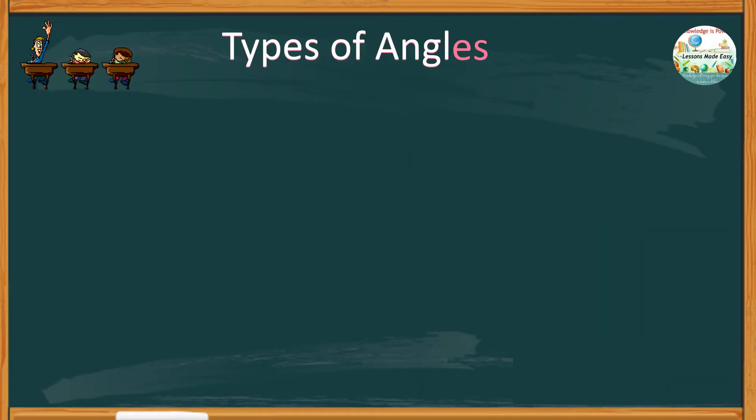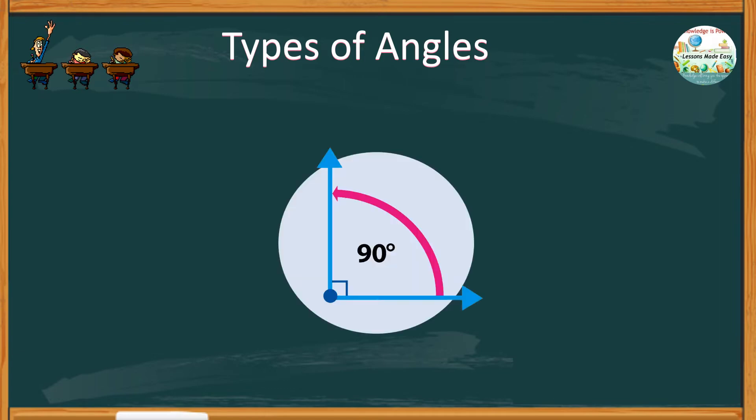There are different types of angles based on size, and I think the very common type is this one. An angle whose measurement is exactly 90 degrees. I'm sure you know this type of angle. This is called a right angle.